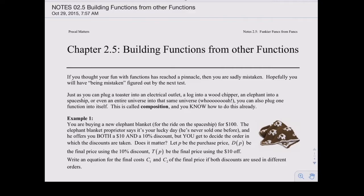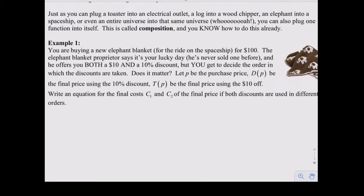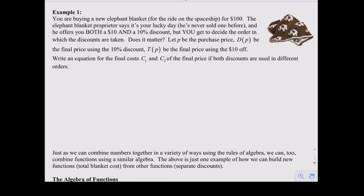Let's look at example one. You're in the market for a very special type of blanket - not to keep warm, but because you like what's on it. You're in the market for an elephant blanket. A two-sided elephant blanket.